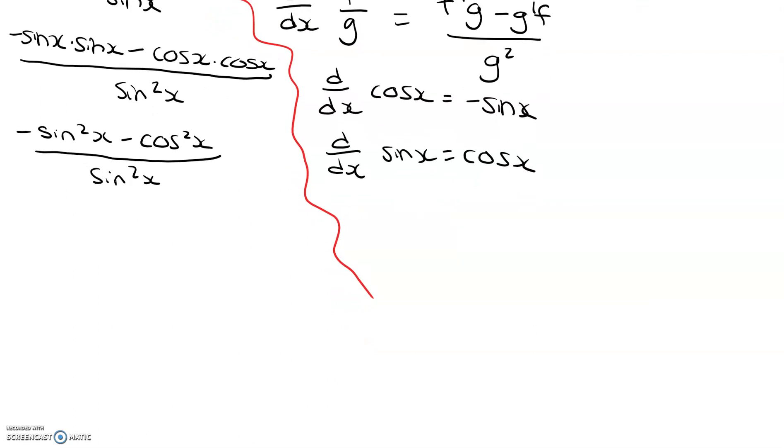Okay, so I'm going to want to factor out this negative in my numerator. When I do that, I get negative 1, and then I have sine squared x plus cosine squared x, again, all over sine squared x.